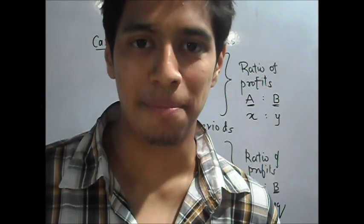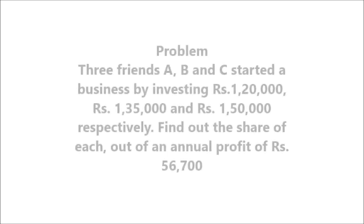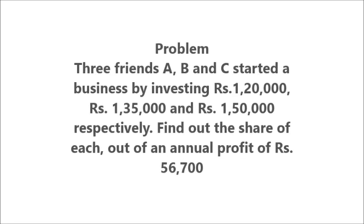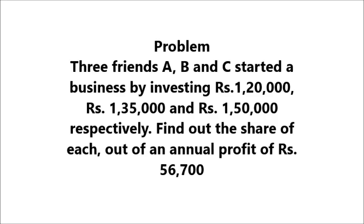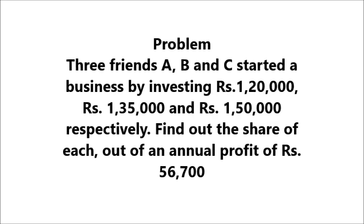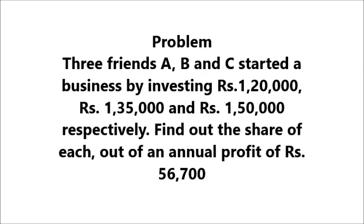Alright. Now, let's go through a simple problem and work it out step by step. Problem. Three friends, A, B and C, started a business by investing 1,20,000, 1,35,000 and 1,50,000 respectively. Find out the share of each out of an annual profit of rupees 56,700.